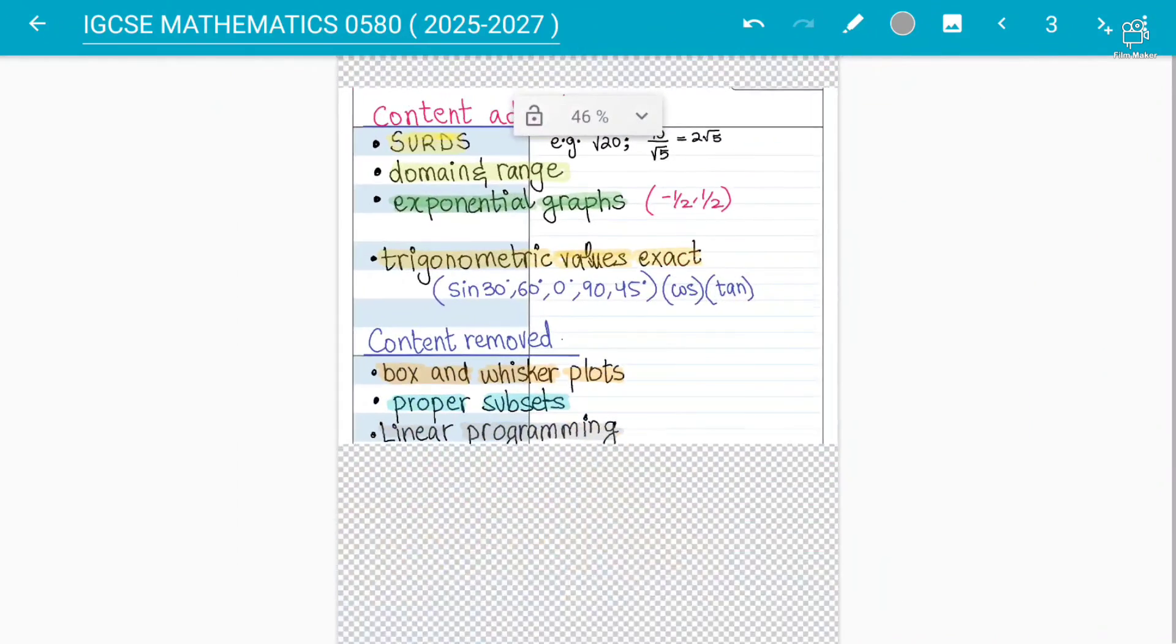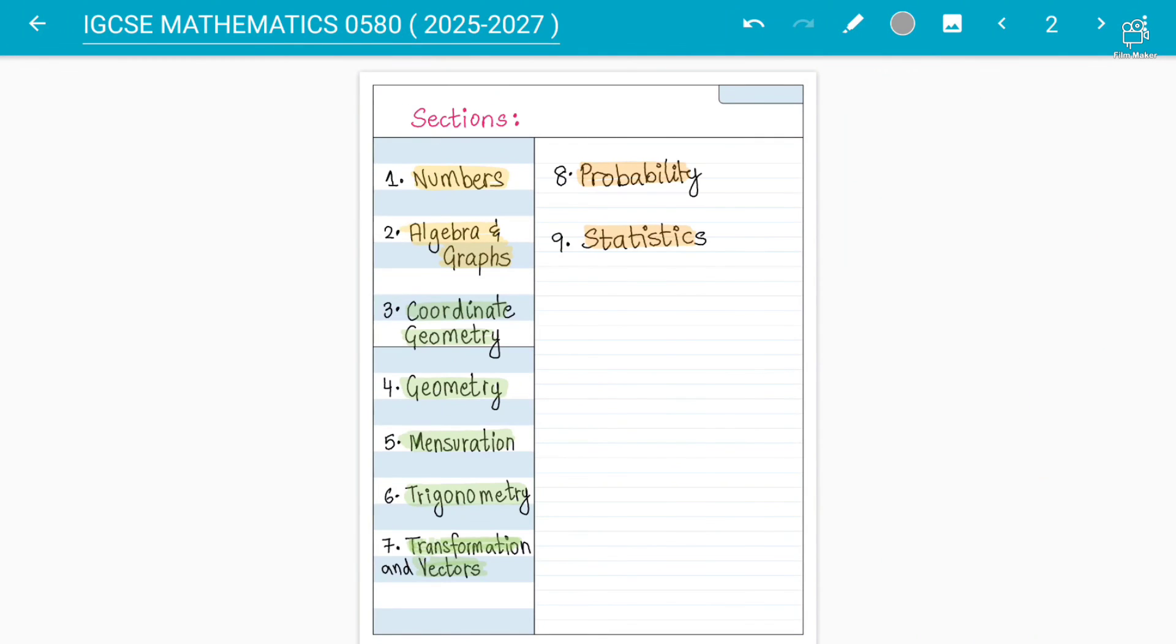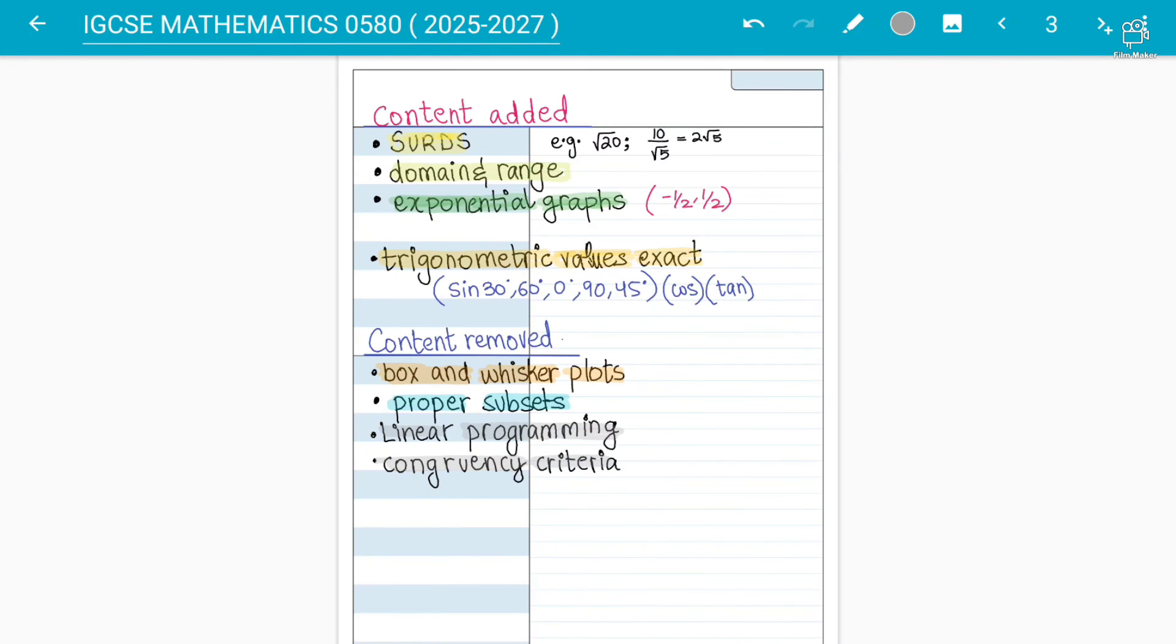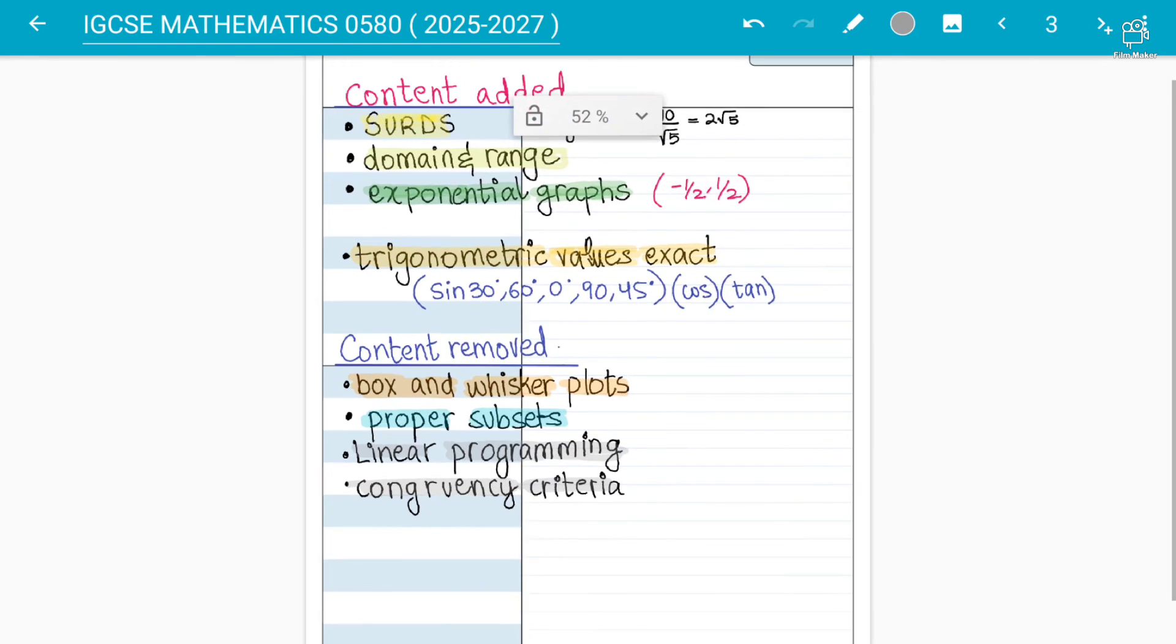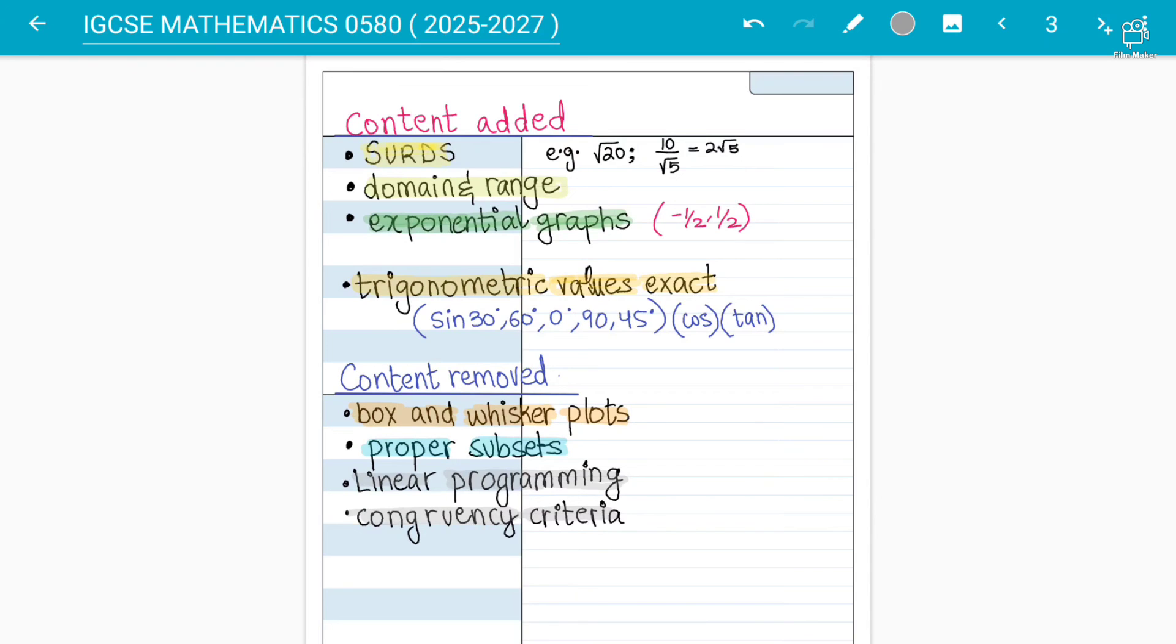If we summarize the whole IGCSE maths 0580, if you start quickly, if you start from scratch you can easily cover the syllabus in seven to eight months properly with complete past paper practice. Sometimes ten months as well, it usually depends on the students, but what we need to focus is they have put more stress - some topics will be tested more from now onwards and they are testing on sine, cosine rule more now.